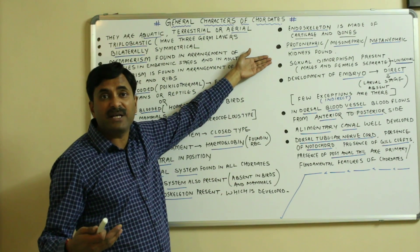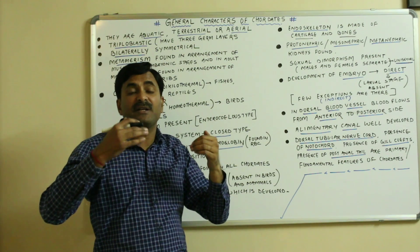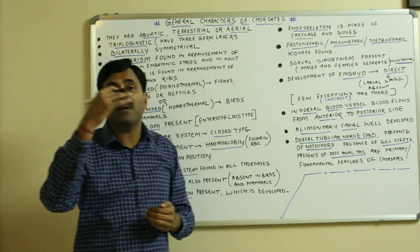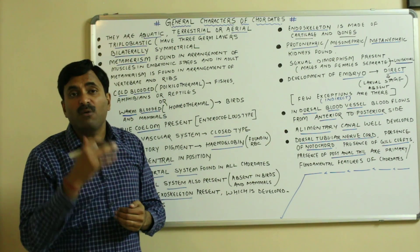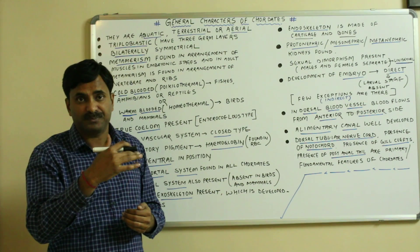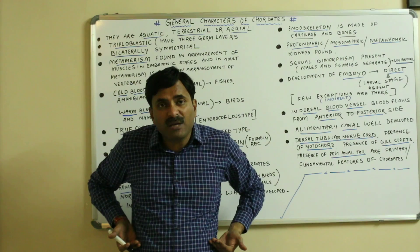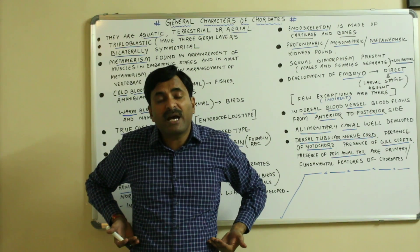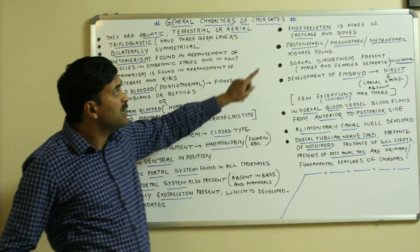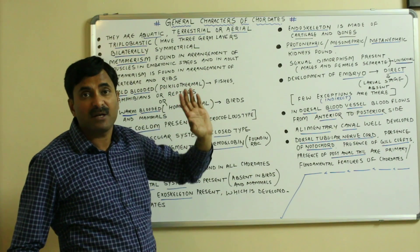Chordates have well-defined kidneys for excretion. Kidneys may be of three categories in different types of chordates: pronephric, mesonephric, and metanephric. This classification is based on position — if the kidney is at the uppermost position it is pronephric, at the middle position it is mesonephric, and at the posteriormost position it is metanephric.